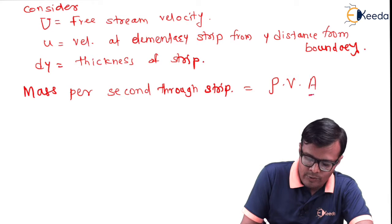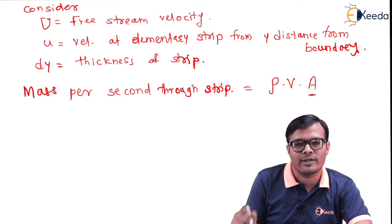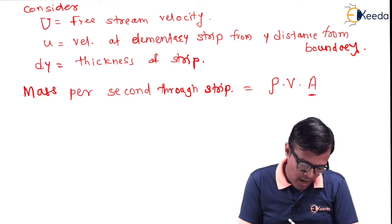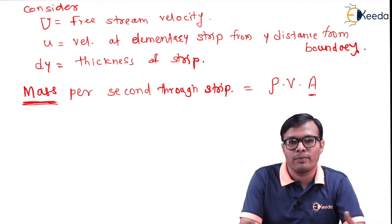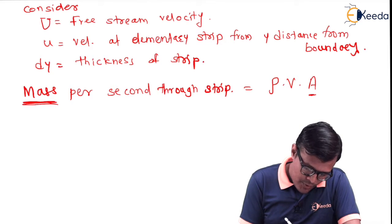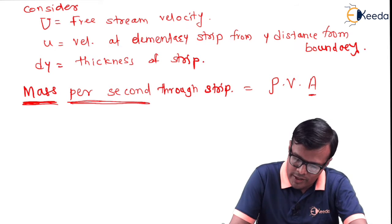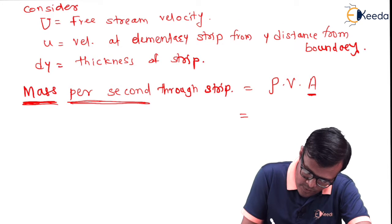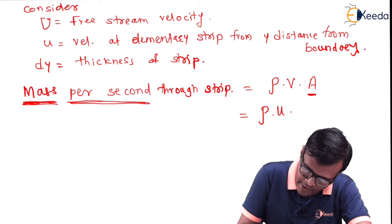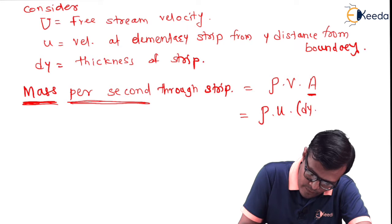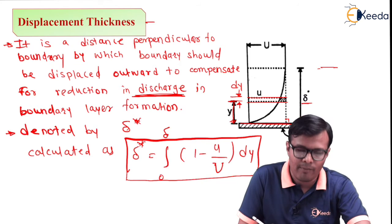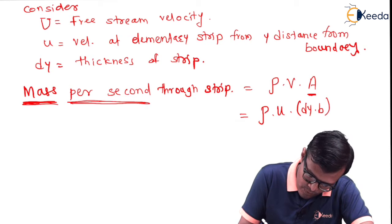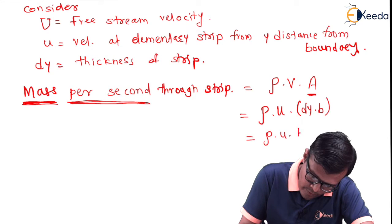Area times velocity gives volume per second in the longitudinal direction. Volume multiplied by density gives mass, and with velocity in meters per second, this becomes mass per second. So in our case, mass per second through the strip equals rho times u times b times dy, where dy is the strip thickness and b is the width of the section.